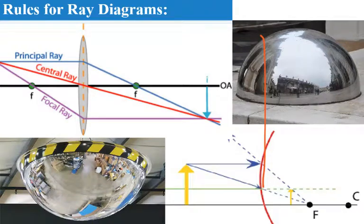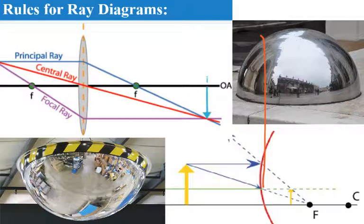Here's another video — this one is on convex mirrors, not concave mirrors. We still follow the same rules for principal ray, central ray, and focal ray: parallel through the focal point, central through the center, and focal point — one through the focal point goes parallel after that. We're going to do lenses very soon.